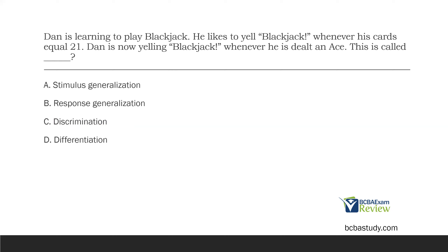What about stimulus versus response generalization — which one is happening here? Ask yourself: how many responses are there and how many stimuli? We have one response for multiple stimuli, so we're looking at stimulus generalization. Response generalization is just the opposite — one stimulus with multiple responses. If you have multiple stimuli, you're dealing with stimulus generalization; if you have multiple responses, you're dealing with response generalization. In this case, he's generalizing the response 'blackjack' from the stimulus 21 to the stimulus ace — this response is being generalized across multiple stimuli.